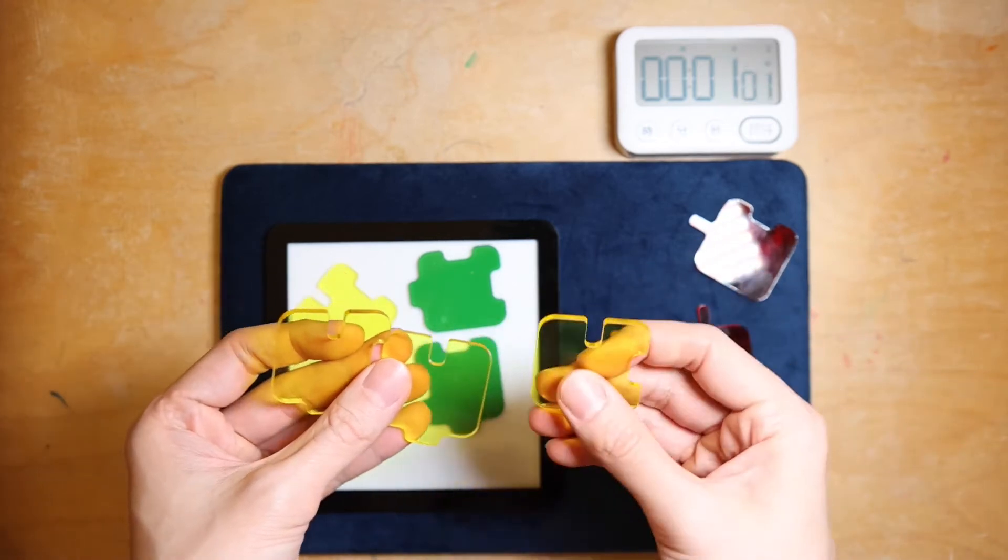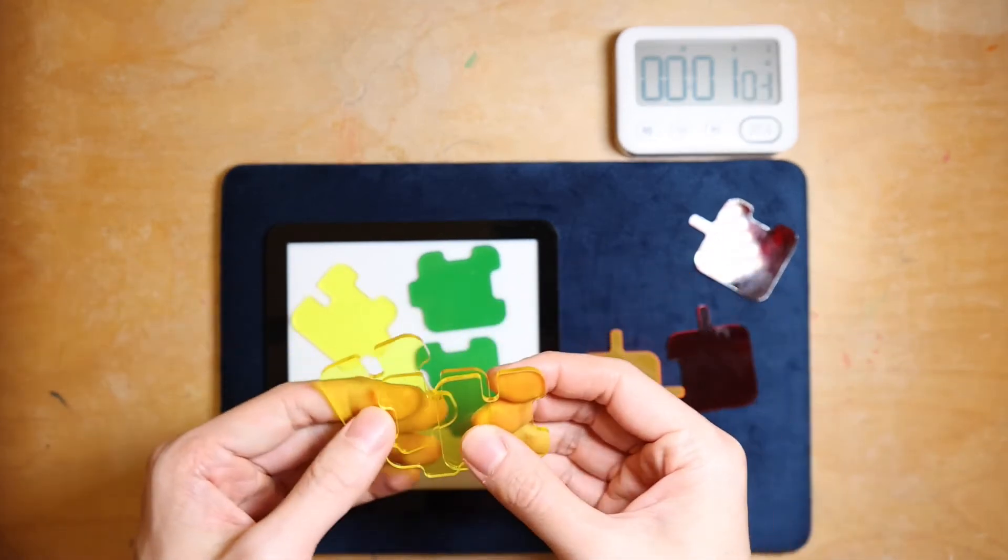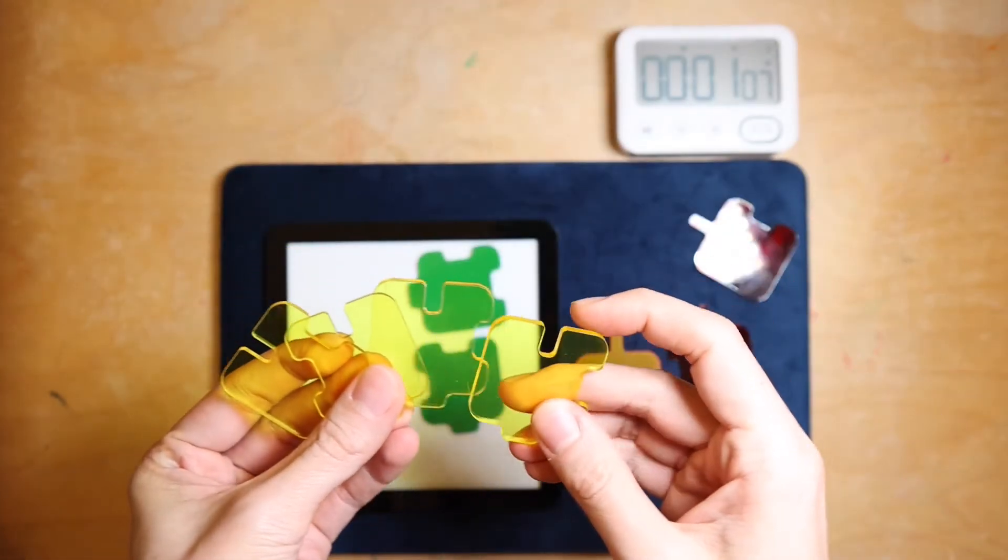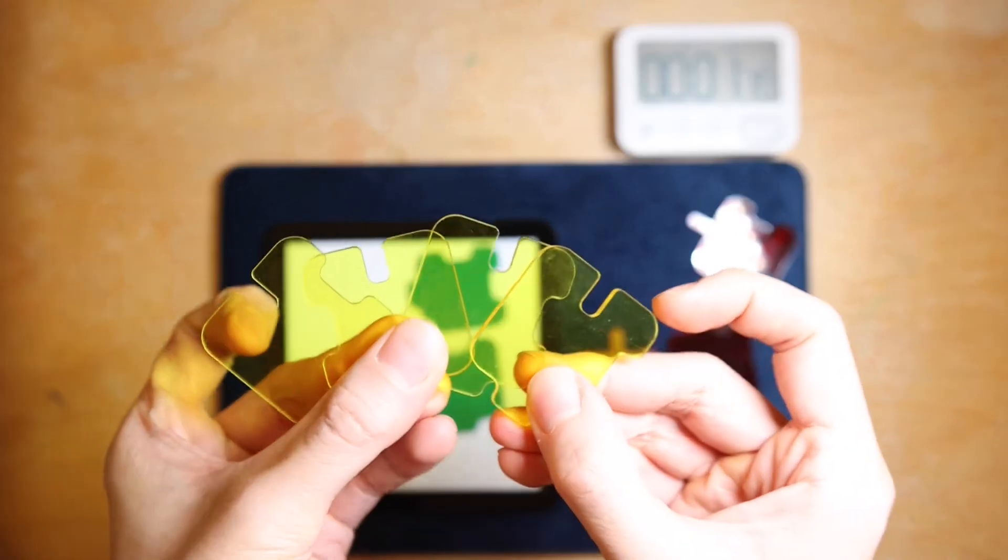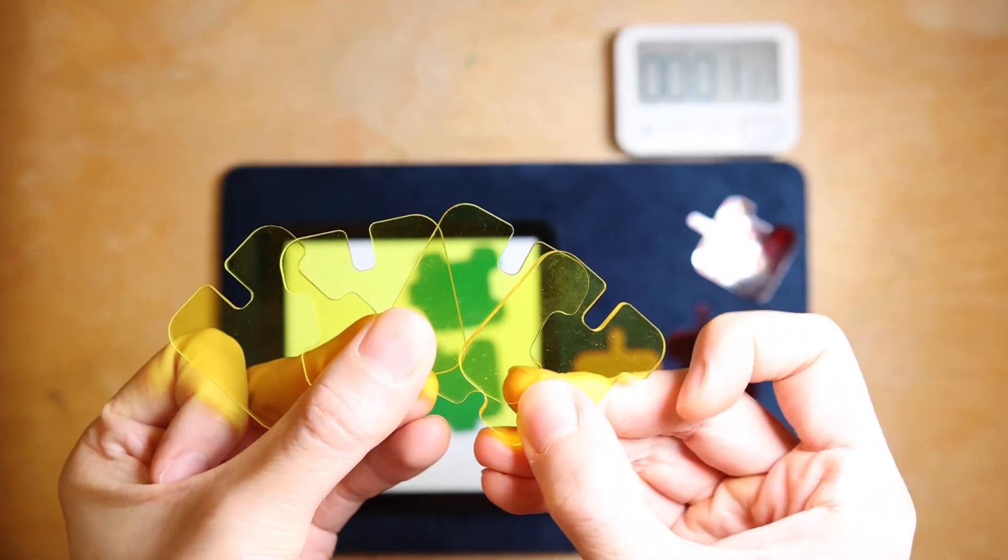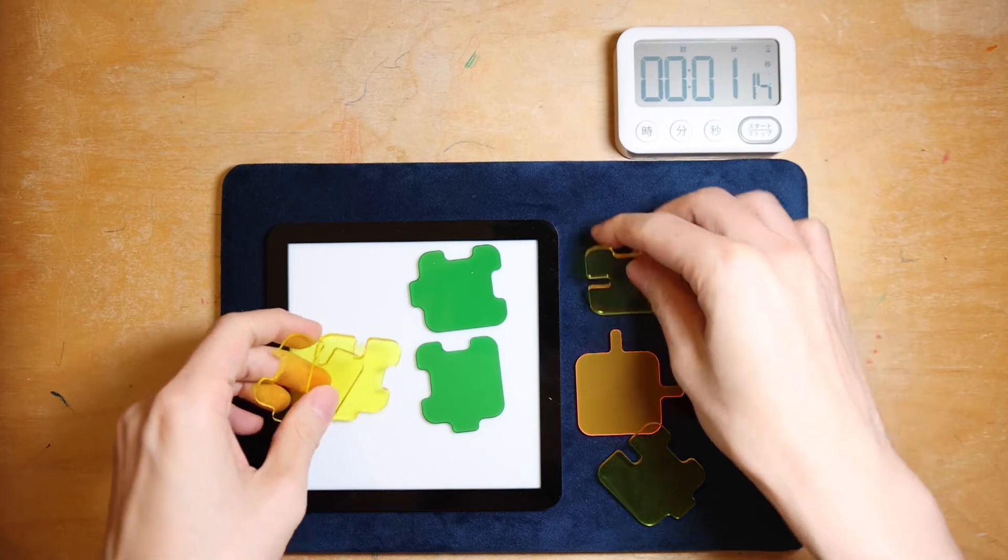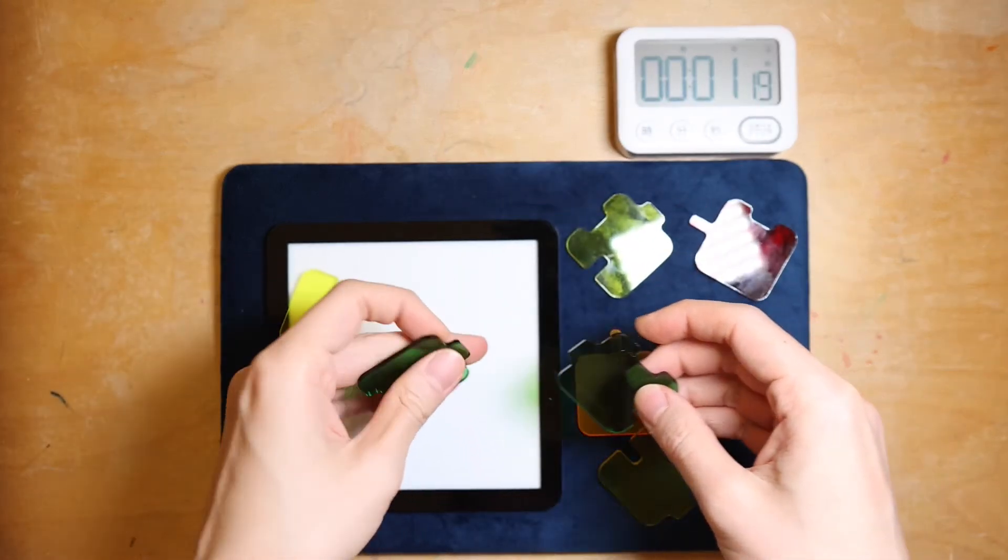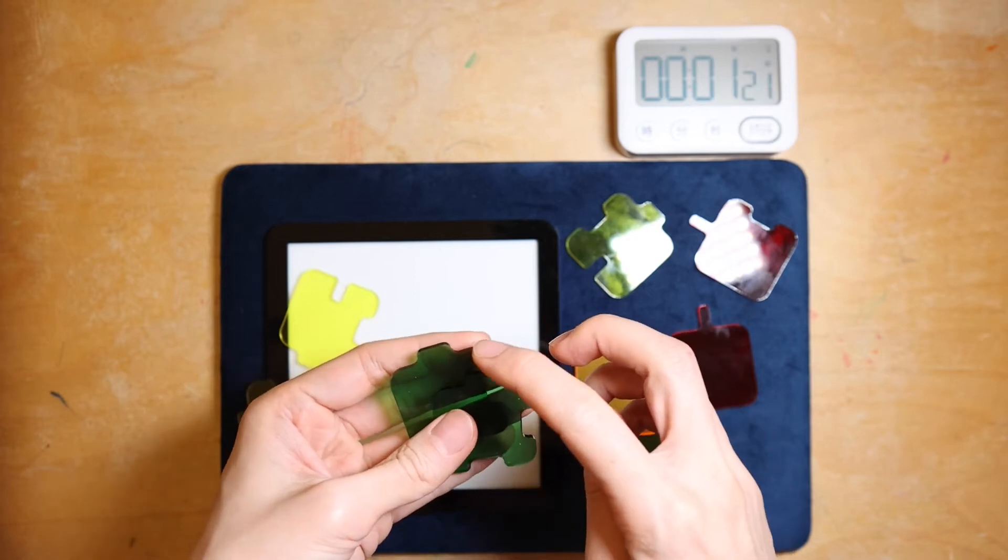And now we count the number of thin slots as well. So here we have one, two, three, and then the last piece here, four. So there are also four thin slots. Not sure if this will help in any way, but the number of slots and protrusions are the same.